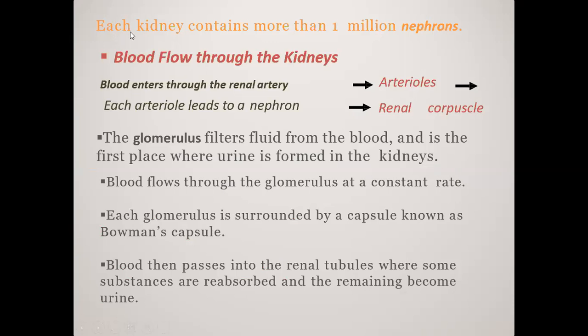The kidneys contain more than 1 million nephrons. The tubule is covered in the glomerulus, and the blood pressure between the glomerulus drives the filtration process.